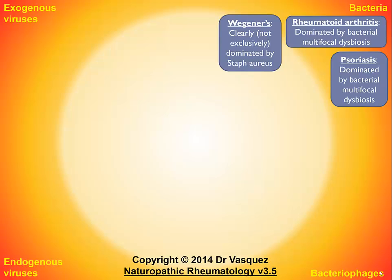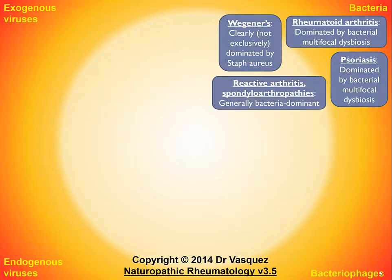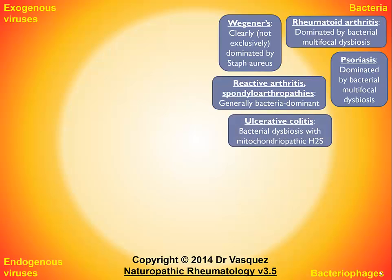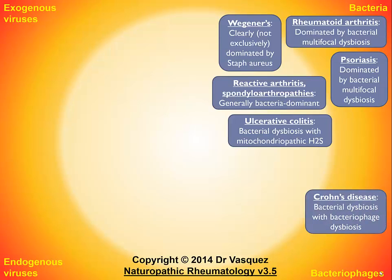Wegener's granulomatosis is clearly, though not exclusively, dominated by Staphylococcus aureus bacteria. Reactive arthritis and the spondyloarthropathies are generally bacteria-dominant. Ulcerative colitis involves bacterial dysbiosis with mitochondriopathic hydrogen sulfide. Crohn's disease is actually more closely related to bacteriophage imbalance — patients with Crohn's have double the number of bacteriophages in the intestinal lumen compared to normal healthy people.